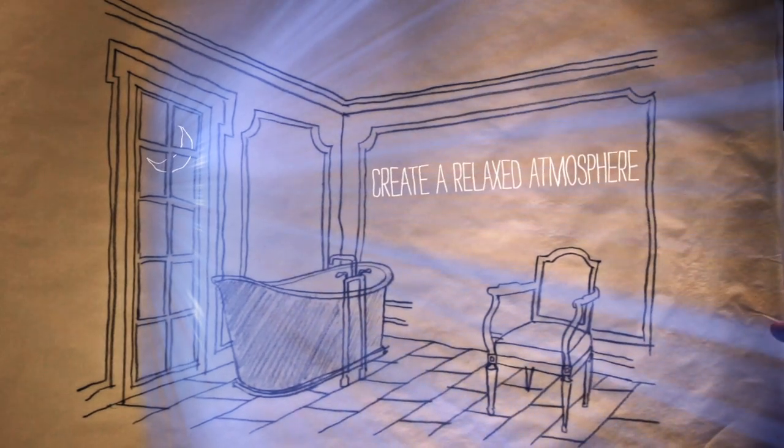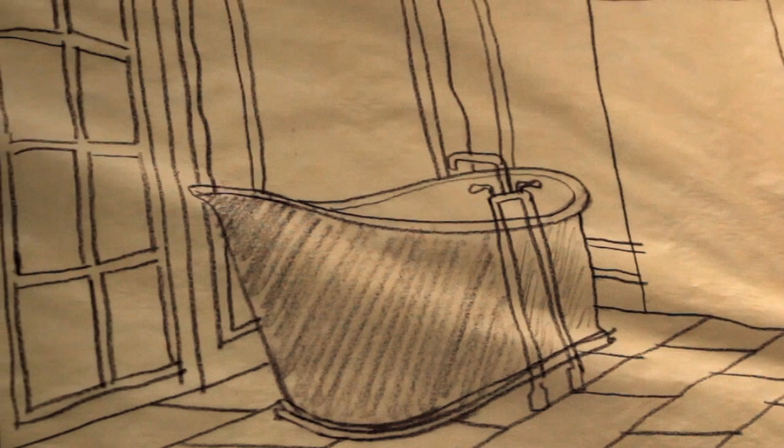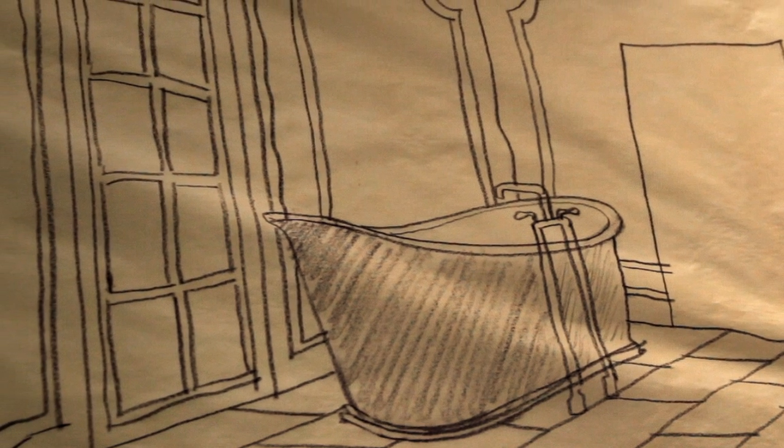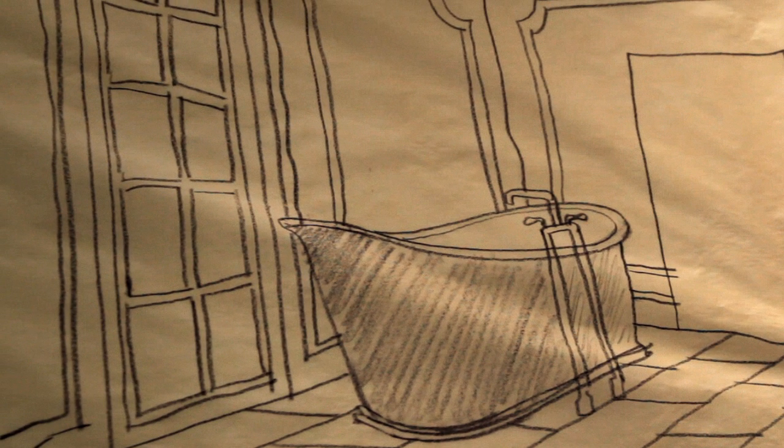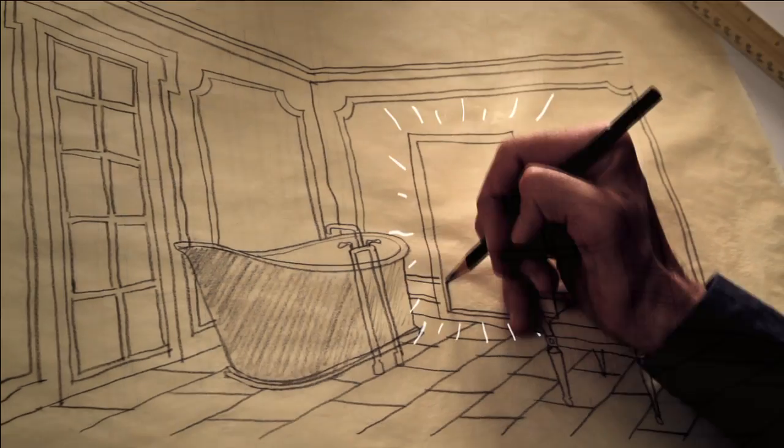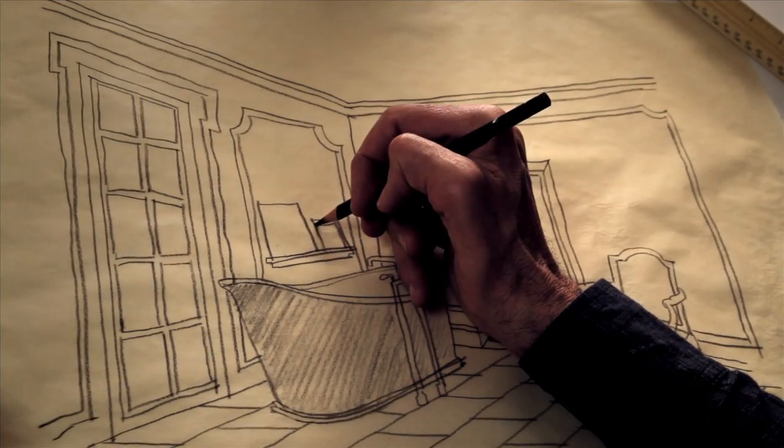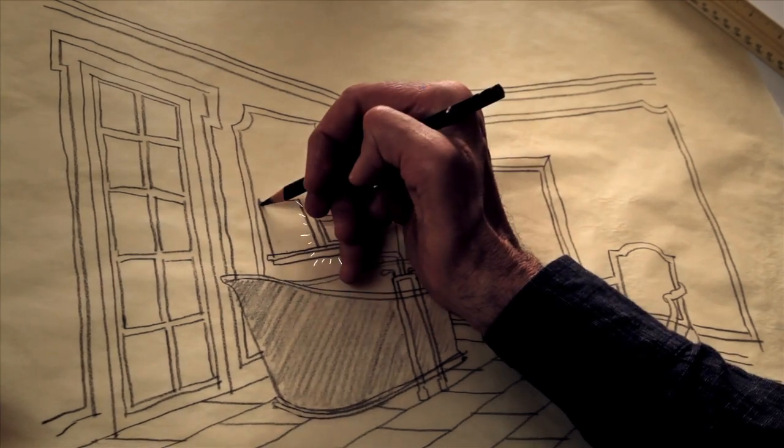If there's a freestanding tub and the walls near it are protected from water, consider stretched canvas art placed where you can see it while soaking, or set a very large piece on the floor to lean on the wall. Even several small pieces on a shelf can have impact and be easily moved or changed to suit your mood.